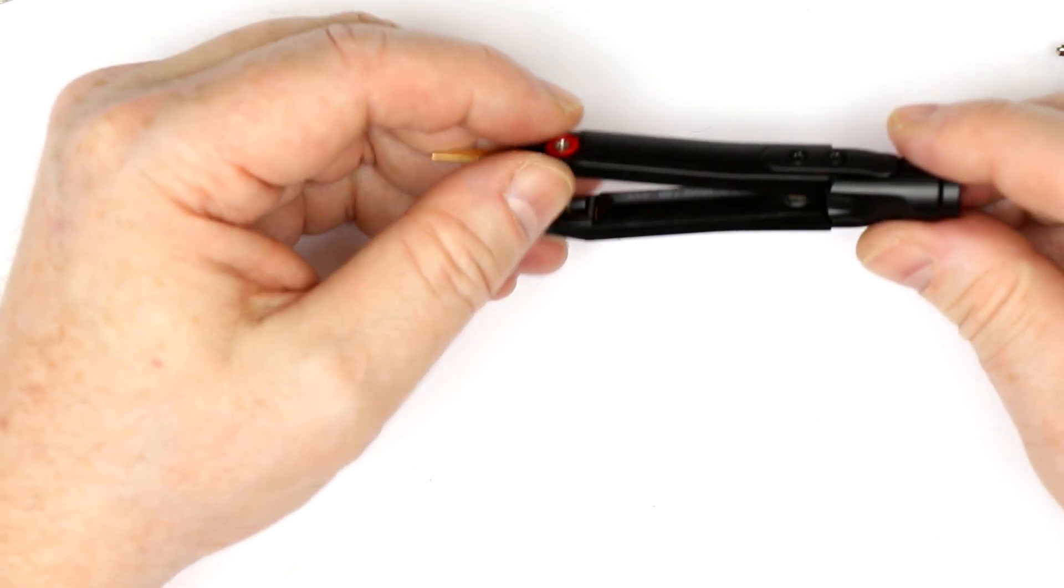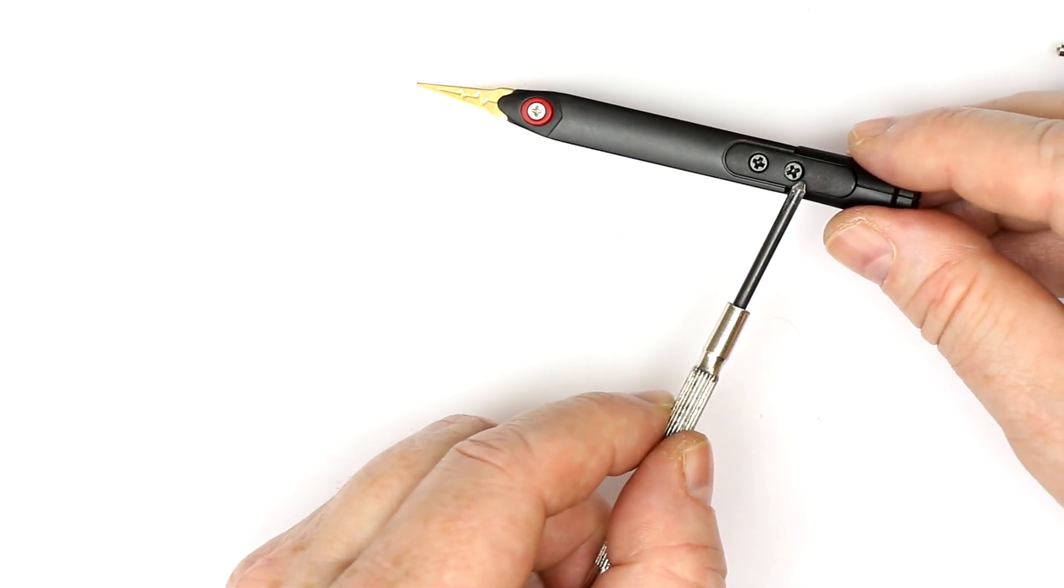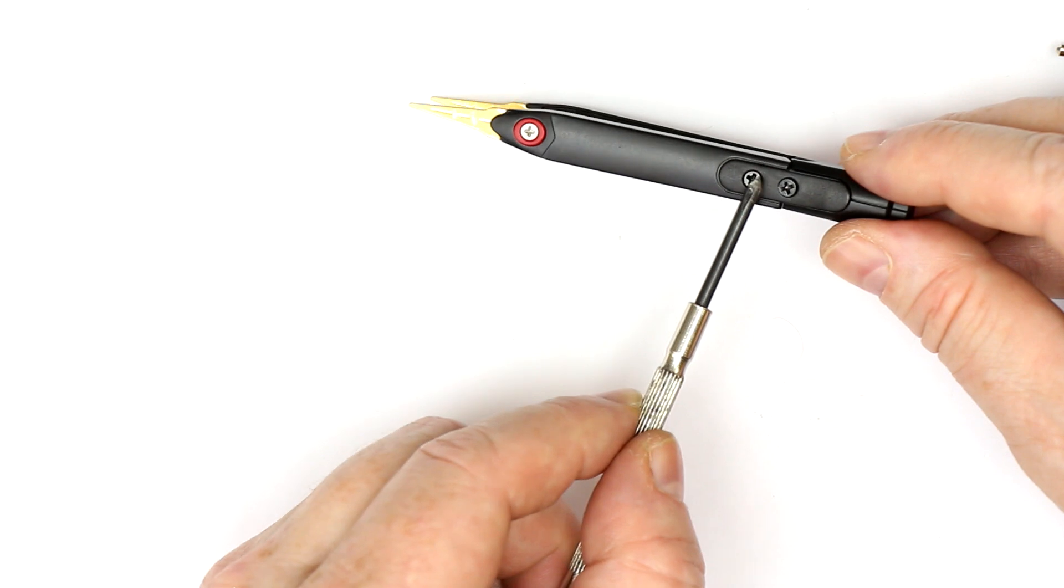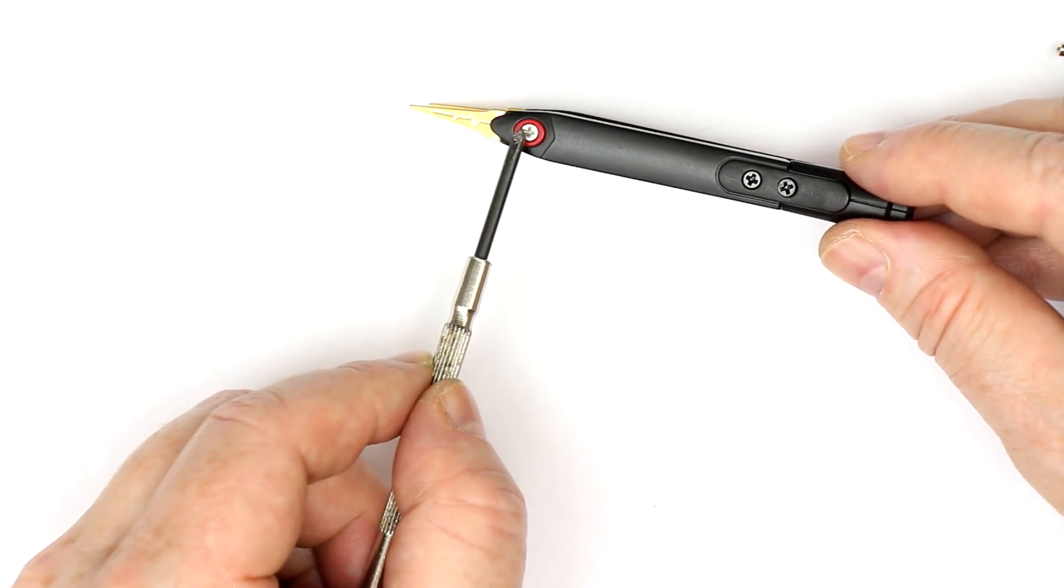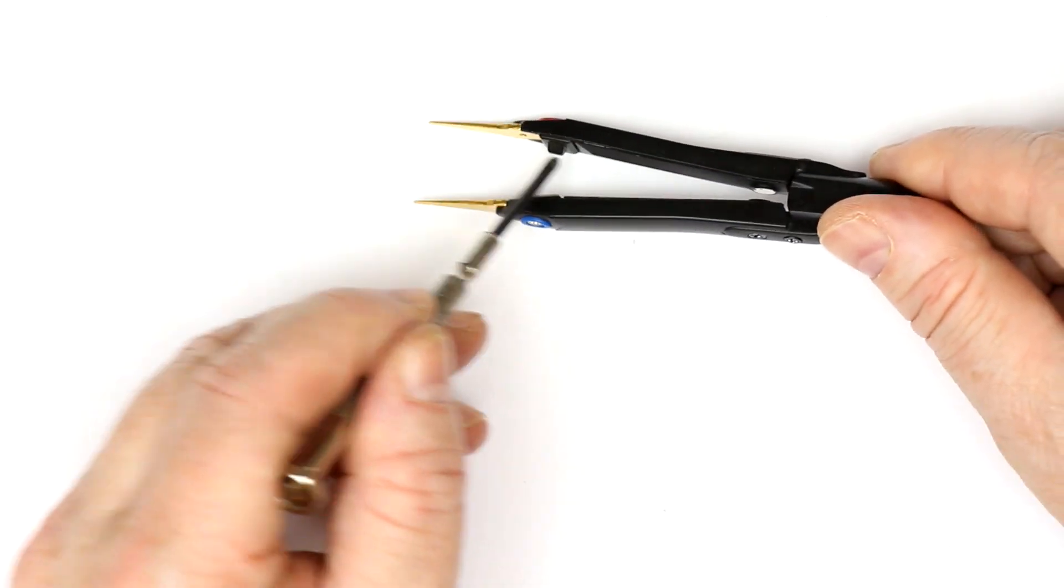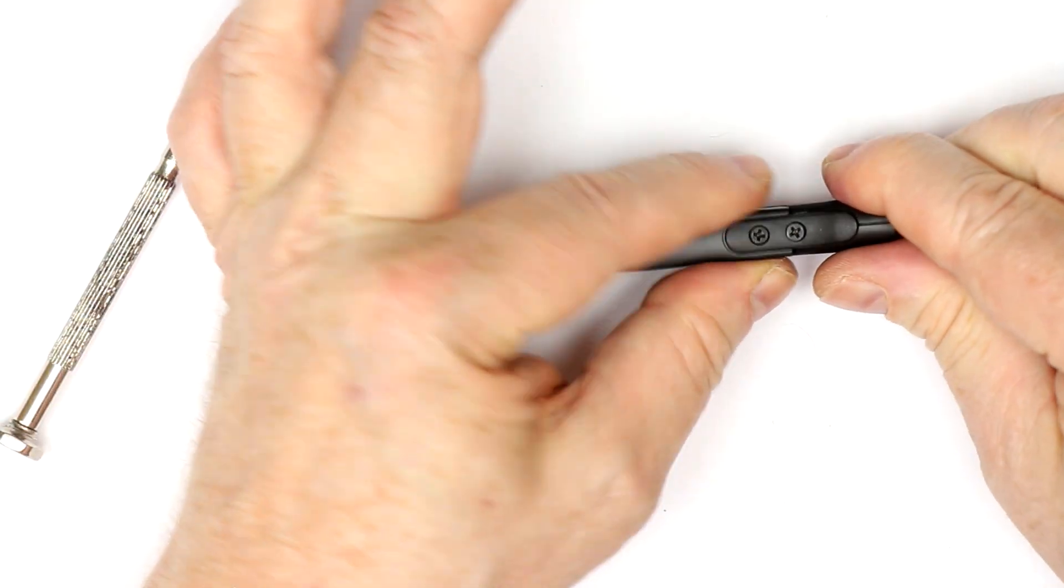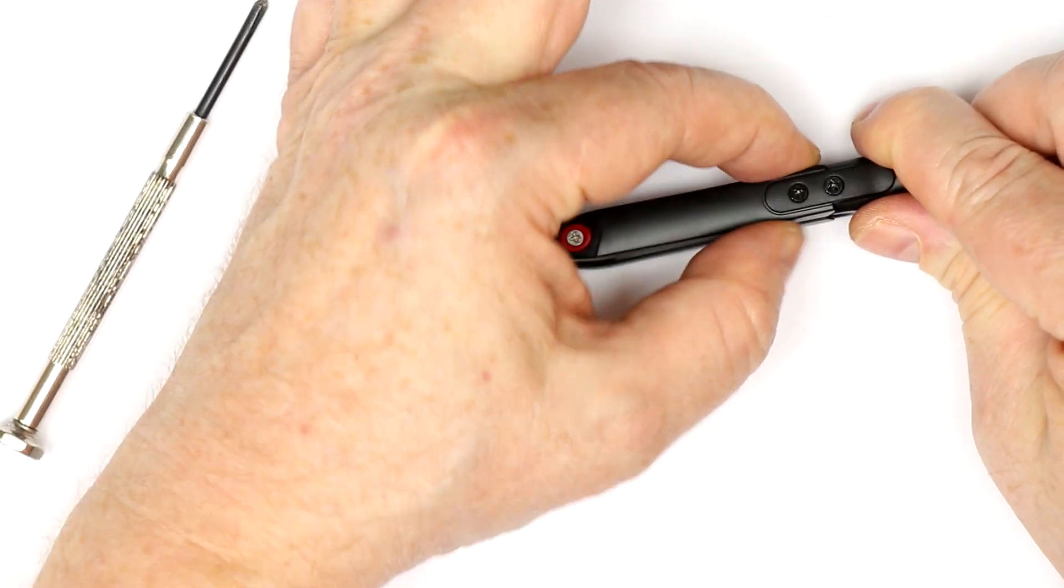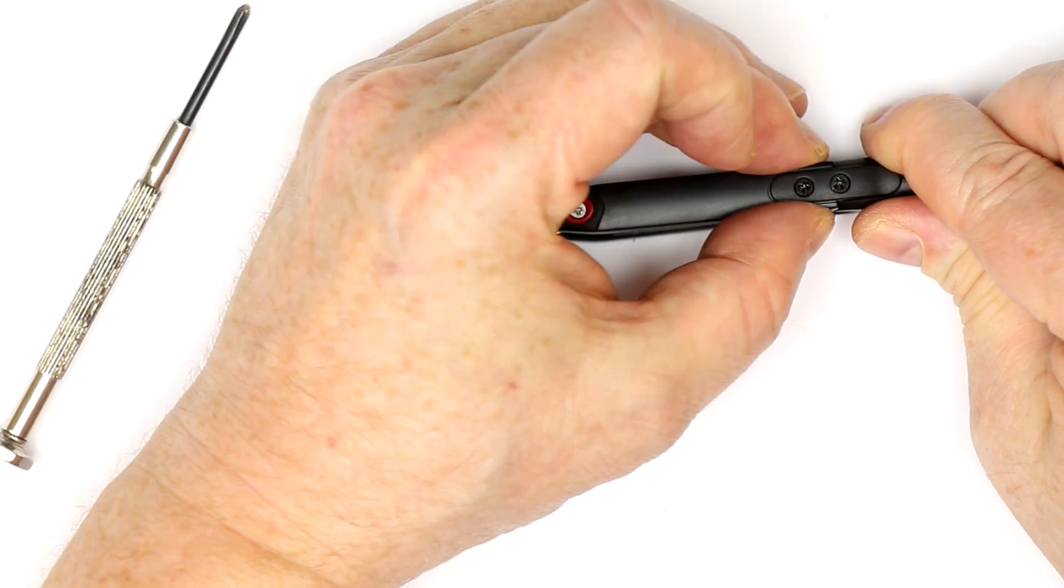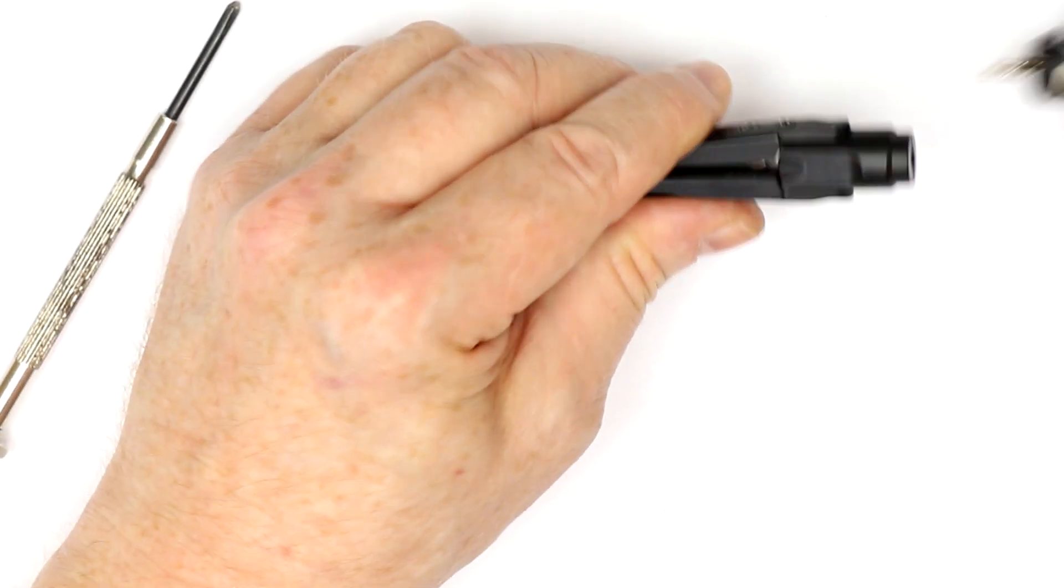And for taking it apart, just the reverse order. First, unscrew these two screws, then the screw that holds the tip, pull out this little thingy here, and then you can pull the plastic holder upwards and have it disassembled.